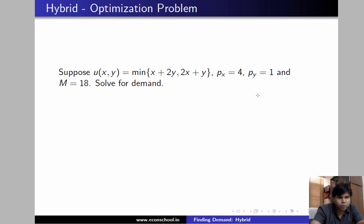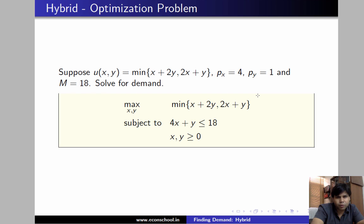Welcome. In this video we'll learn how to solve a utility maximization problem where utility is min(x+2y, 2x+y) — a hybrid of substitutes and complements. The price of x is 4, price of y is 1, and income is 18. We want to maximize with respect to x,y: min(x+2y, 2x+y) subject to the budget constraint 4x+y ≤ 18, with x ≥ 0 and y ≥ 0.